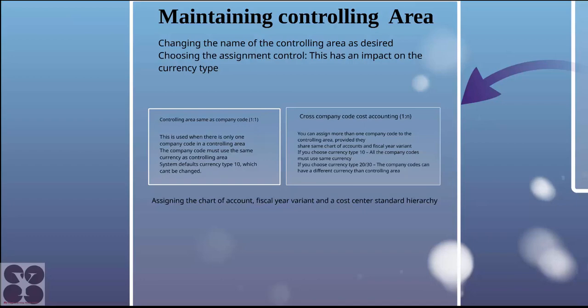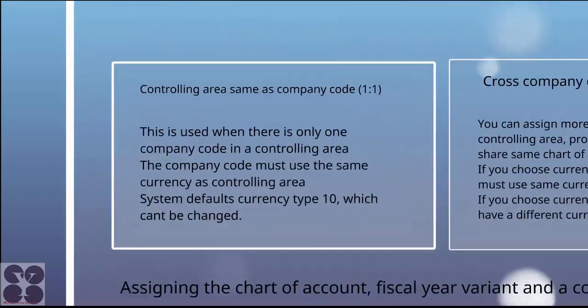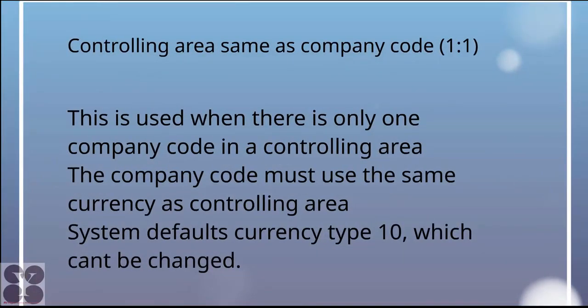When maintaining the controlling area, you change the name as desired and choose the assignment control, which has an impact on the currency type. You also assign chart of accounts, fiscal year variant, and cost center standard hierarchy. In a one-to-one relation where the controlling area is the same as the company code, there is one company code and one controlling area, used when there is only one company code.